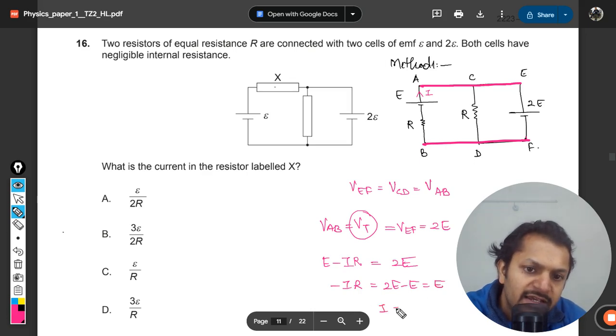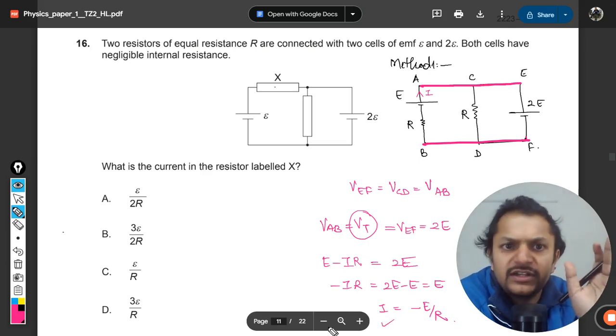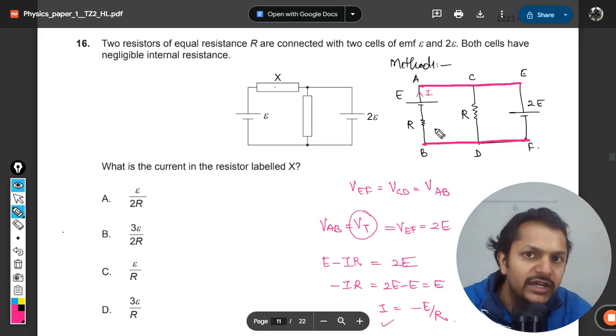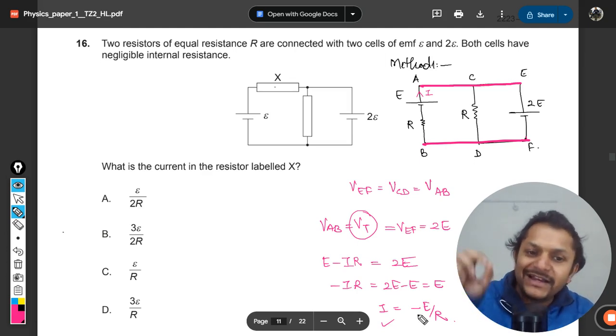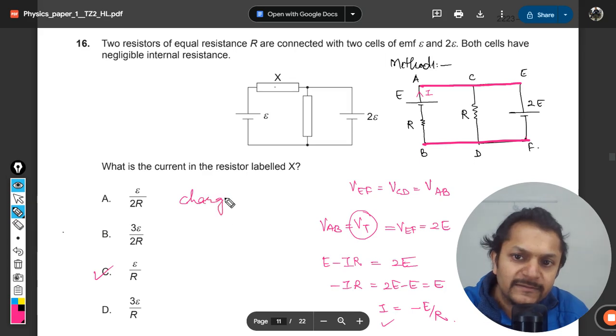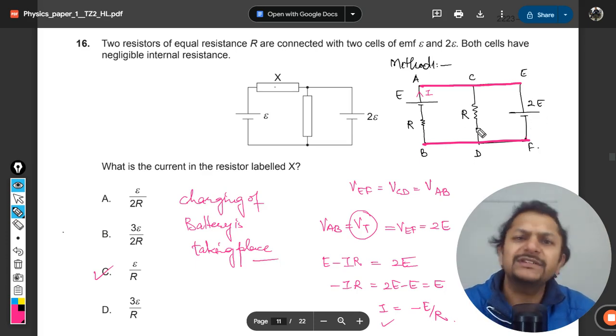This becomes e, so clearly i is negative e by r. What does negative current mean? We just chose the direction of the current with our whims and fancies. That direction was not given, we just assumed the current was going out. But that's not the case - the current is moving in the opposite direction. That's why the direction comes out negative from our equation, but the magnitude will be e by r.